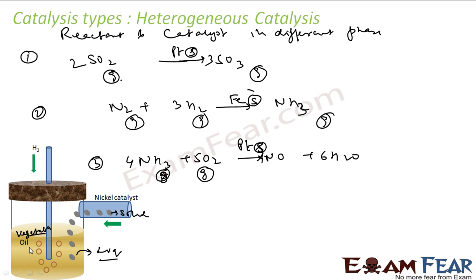Another example is hydrogenation of vegetable oil using nickel or platinum catalyst and hydrogen gas. Hydrogen is gas, vegetable oil is liquid, and the catalyst is solid — so this is also an example of heterogeneous catalysis.